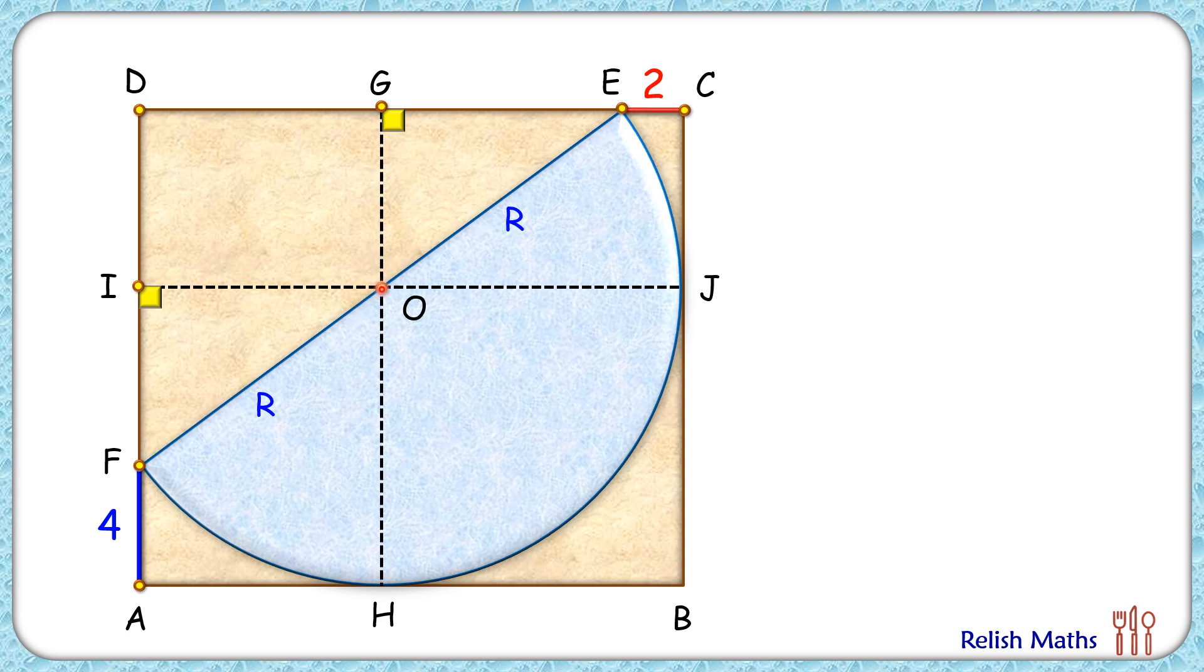Now here if you see, OH is nothing but the radius of the circle. Now IA length, this figure formed here is a rectangle. So IA length will also be r cm and IF will be r-4.